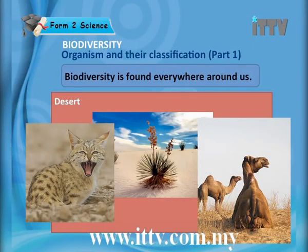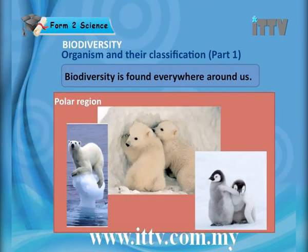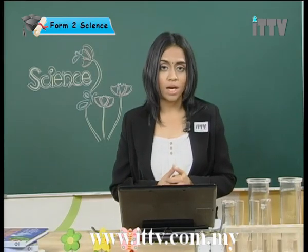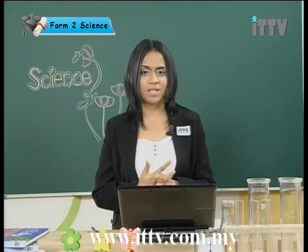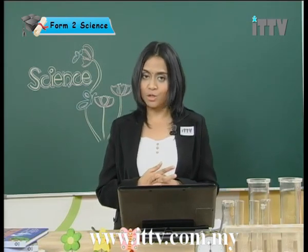In the desert, we have different kinds of animals and plants like the cactus, jackrabbit, kangaroo rat and mainly camels. In the polar region, we have seals, arctic fox, and penguins. In the north pole we have polar bears and in the south pole we have penguins — polar bears and penguins never get a chance to meet.